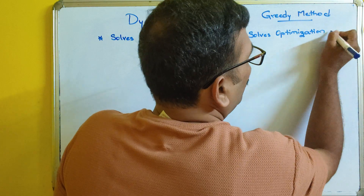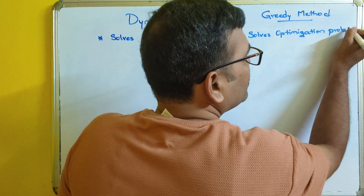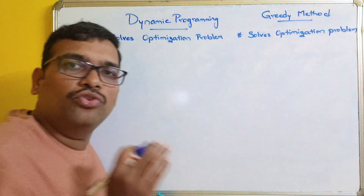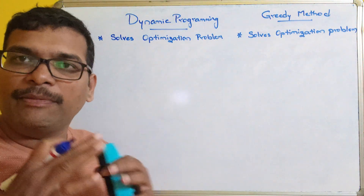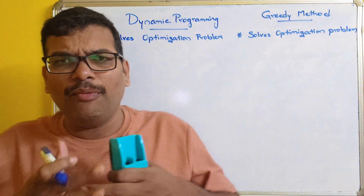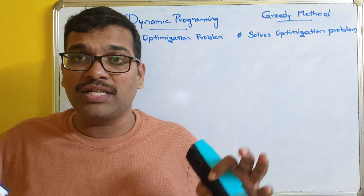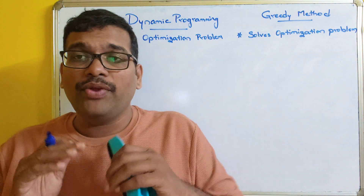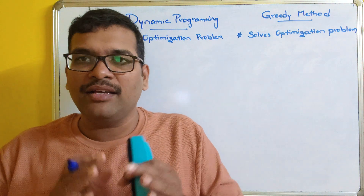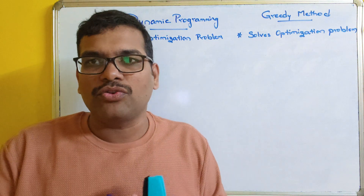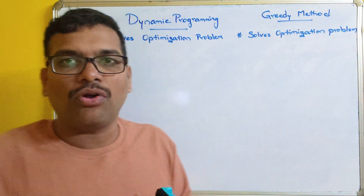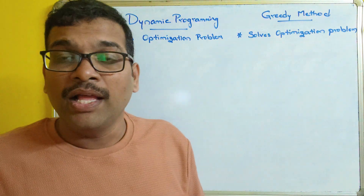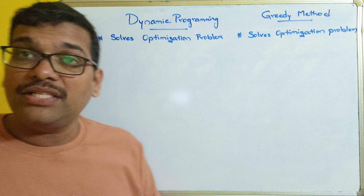Optimization problem means getting the best or optimal solution. There will be a lot of solutions, and among all those solutions we have to select the best one — that is called the optimization problem.